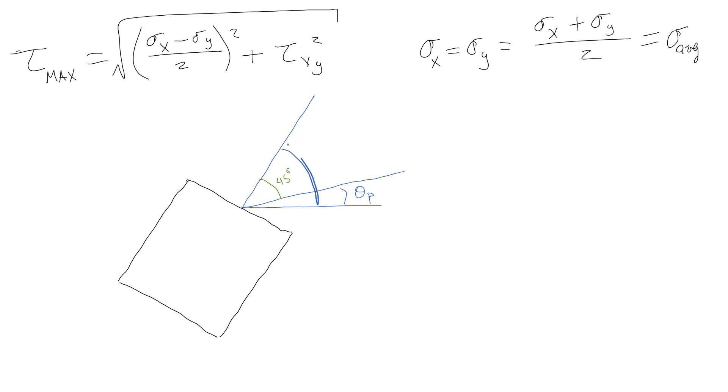And then that means that all of your taus are going to be maxed out. So all of these are maxed, and then all of your normals are going to be the same values, which is the average of the two originals.